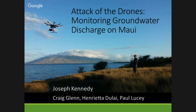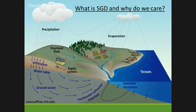Christina did a great job prefacing where I'm going with my talk on Maui. I'm going to get into the use of drones — and I know there's a lot of bad press, but they are extremely useful. Quick conceptual model: SGD is just that infiltrated water that picks up whatever land use is going on, and travels down to the coastline where it discharges out.